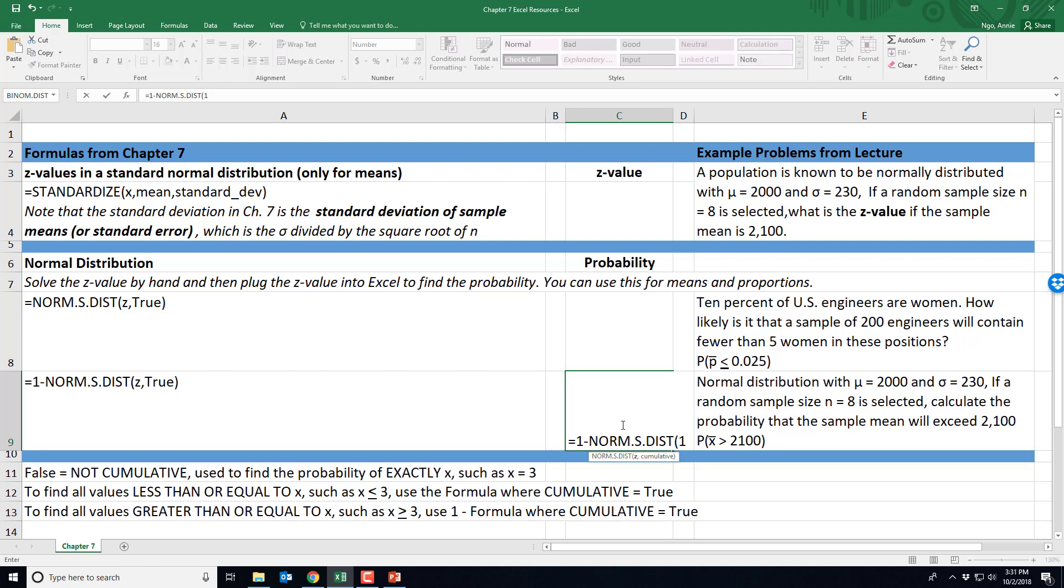Our z value was 1.23, comma, true, because we are always looking for the cumulative probabilities when we're working with sampling distributions. And I'll go ahead and hit enter. And so we get the probability at 0.1093.